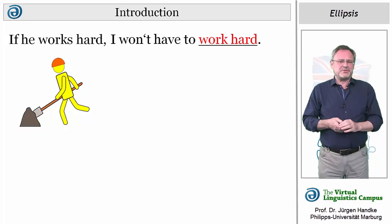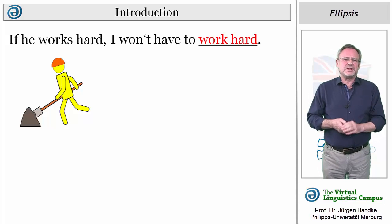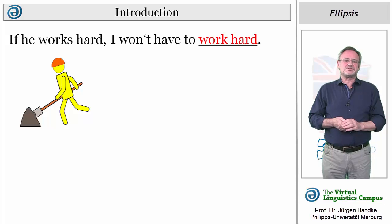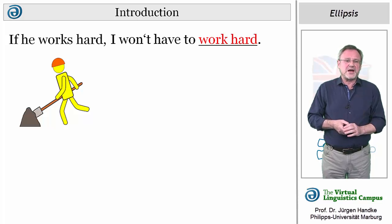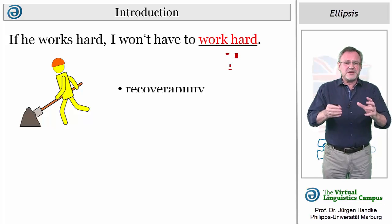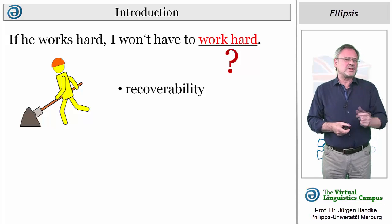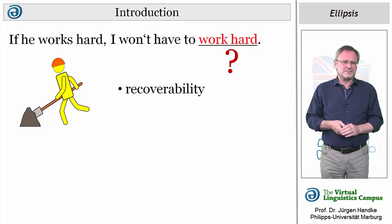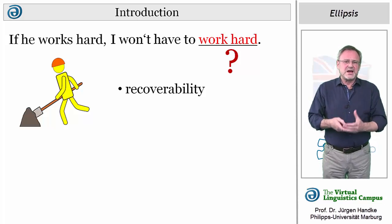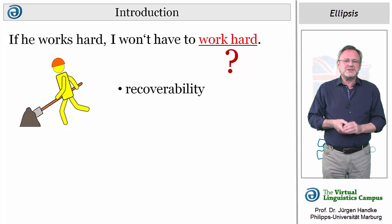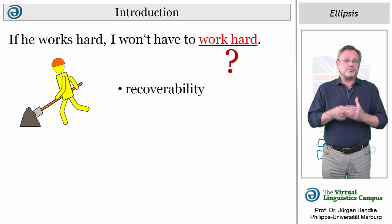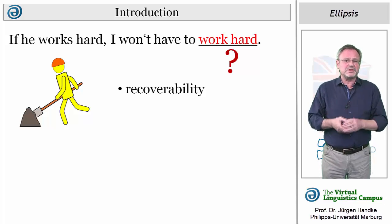There are various parameters which help us to categorize ellipsis. One such parameter is referred to as verbatim recoverability, or in short, recoverability — that is, how the actual word or words whose meaning is understood or implied can be recovered.